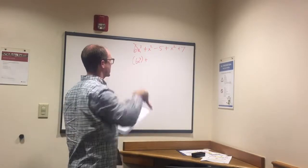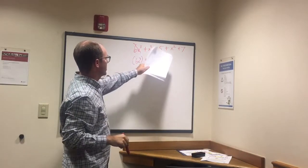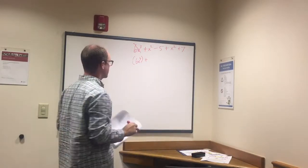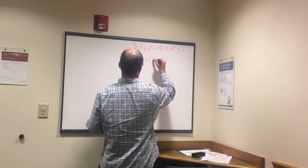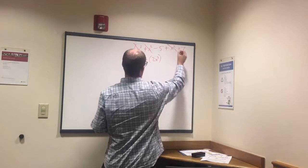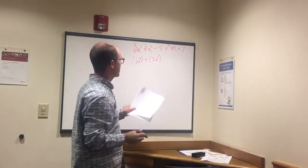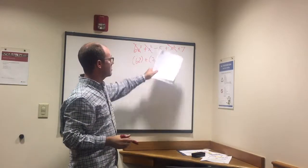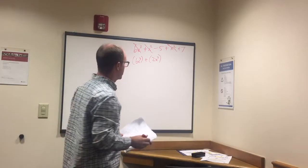We have x squared and we have x squared again so we have 2x squared. We add those together, get rid of them. And then we have all that's left is minus 5 plus 7, that's 2.